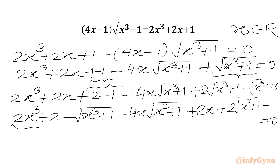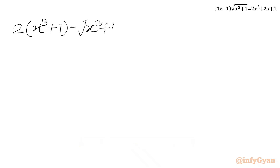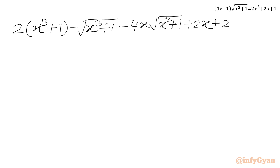From the first two terms of LHS, 2 is looking common. So we will take 2 common out; in the bracket it would be x³ + 1. Then we have minus √(x³ + 1), then minus 4x√(x³ + 1), then plus 2x, then 2√(x³ + 1) - 1 equal to 0.